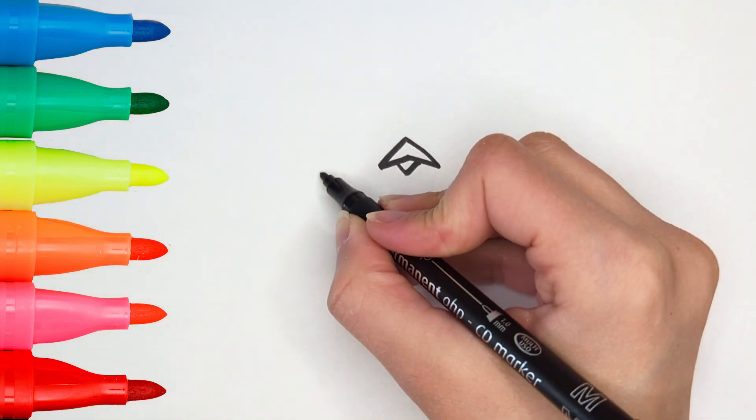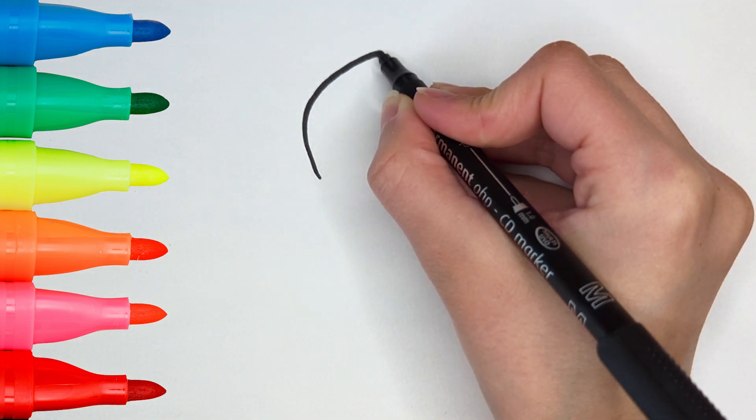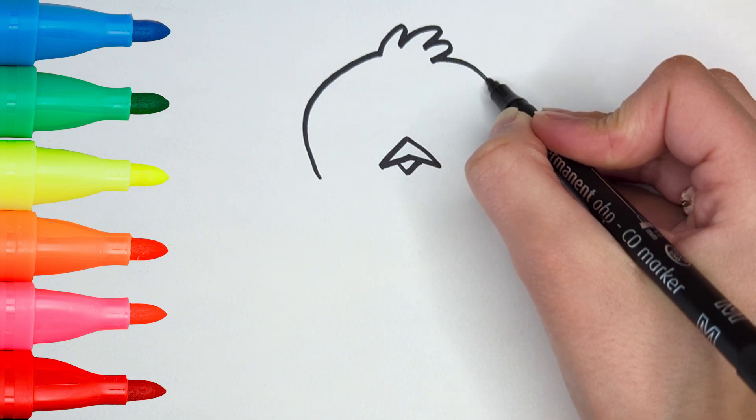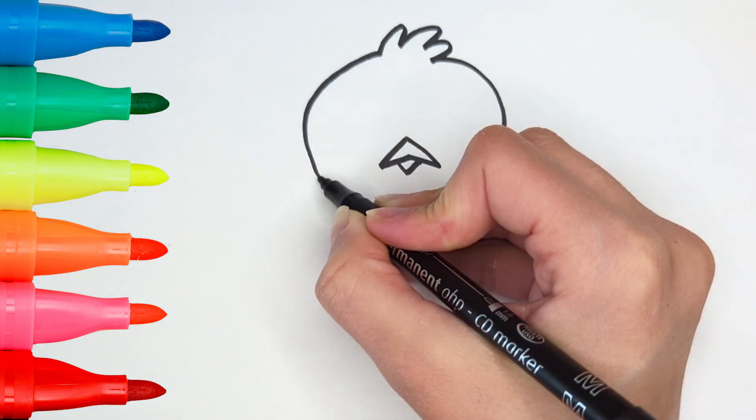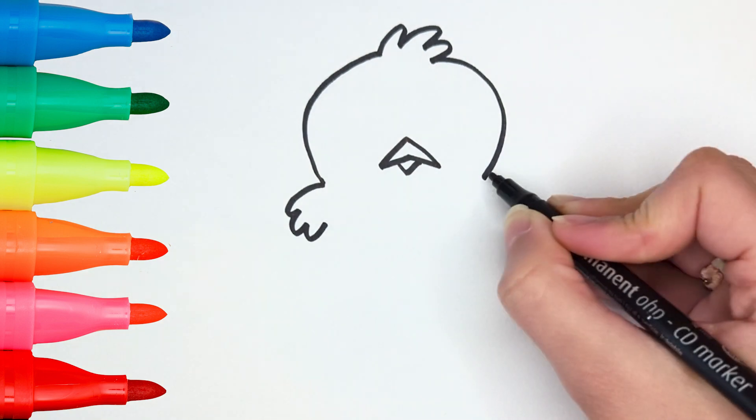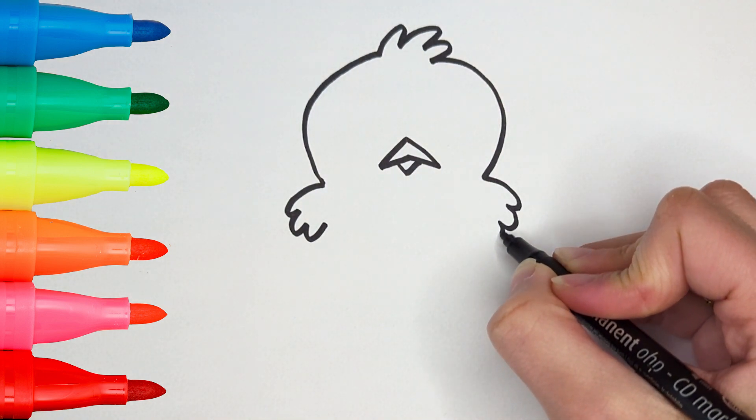So easy, just like two triangles. Then let's draw the head. The head is circular with some feathers on the top. Okay, now let's go and draw two little wings.